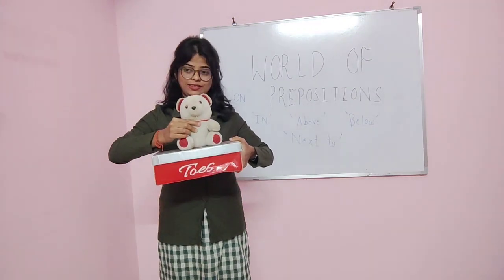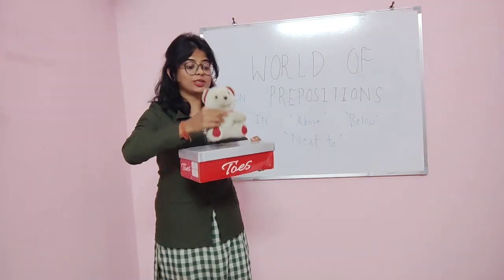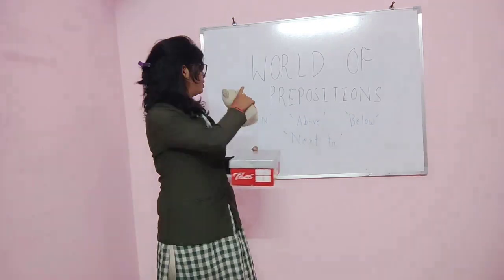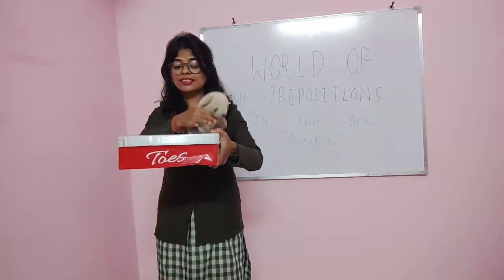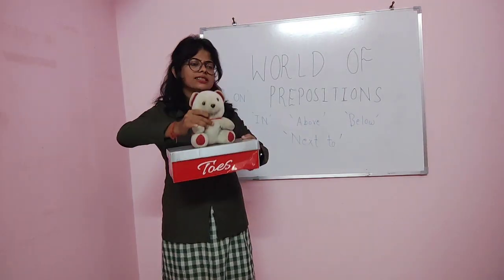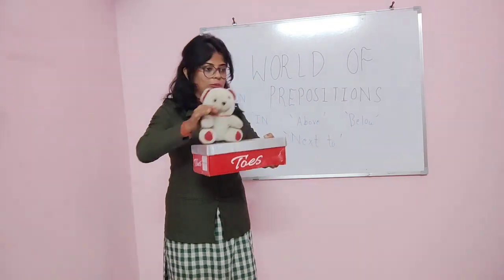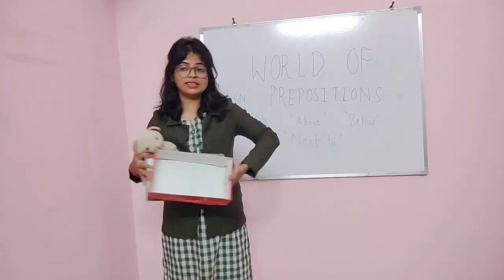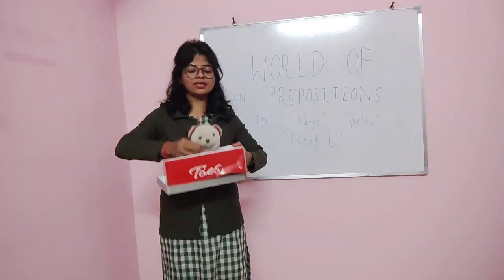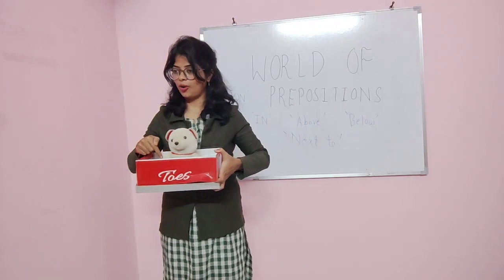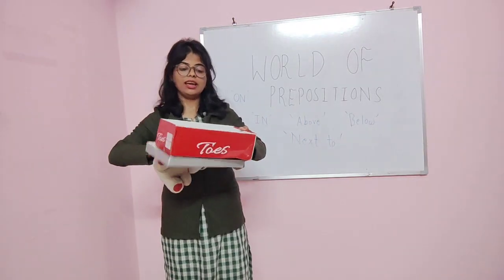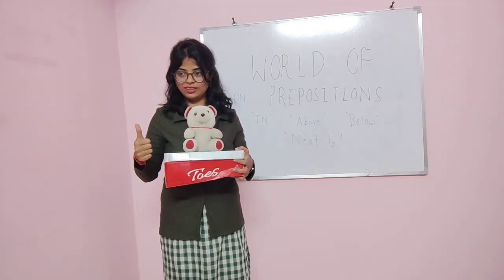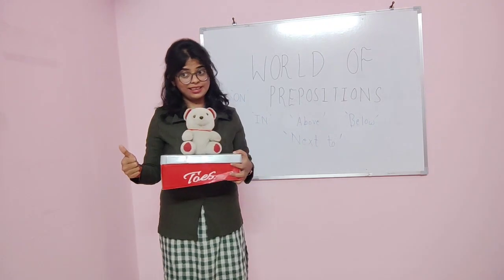Now I place this teddy here — teddy is on the top of the box. So this is 'on'. We use 'on' when something is on a flat surface. Now if I open this box, you can see there is empty space, and I put this teddy here — teddy is in the box. And when I place it on the top, then it is on the box. Did you get what I said?